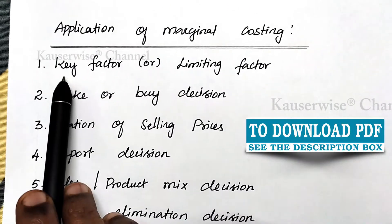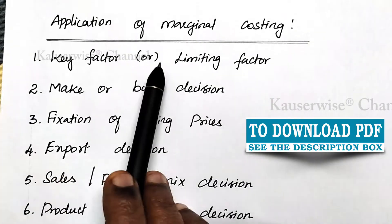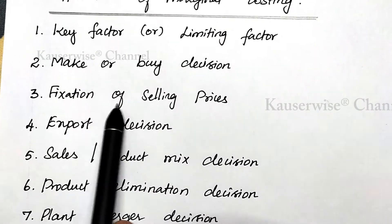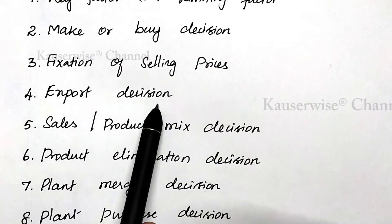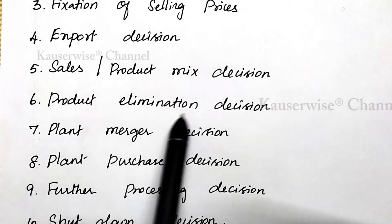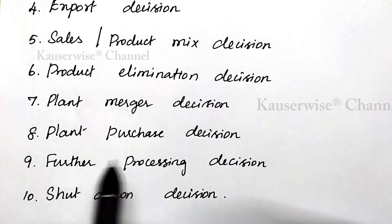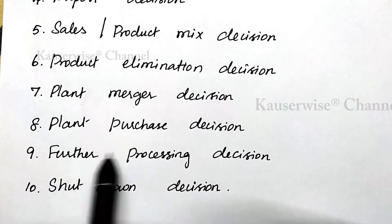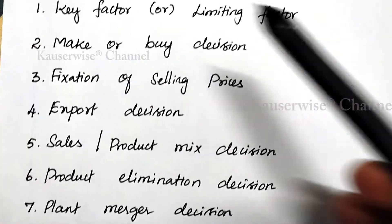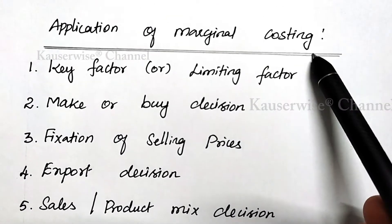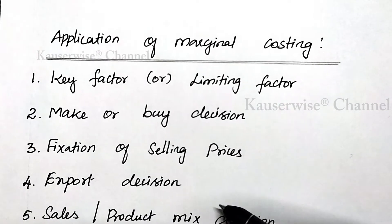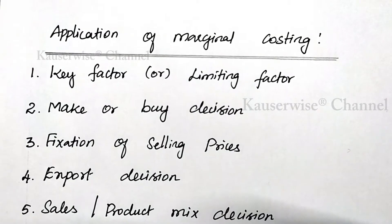I am going to read them one by one. The first one is key factor or limiting factor. Second, make or buy decision. Third, fixation of selling price. Then export decision, sales or product mix decision, product elimination decision, plant merger decision, plant purchase decision, further processing decision, and the last one, shutdown decision. These are the list of applications of marginal costing in managerial decision making. We are going to see each and every application along with a numerical problem.